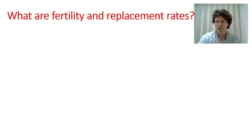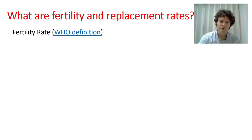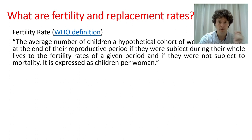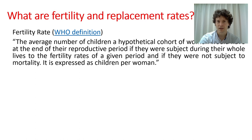So why is everyone worried about fertility and replacement rates? The WHO definition of fertility rate is the average number of children a hypothetical cohort of women would have at the end of their reproductive period, if subject to the fertility rates of a given period and not subject to mortality. In simple terms, fertility rate is how many children the average woman has in a given country if they live to the average female lifespan.